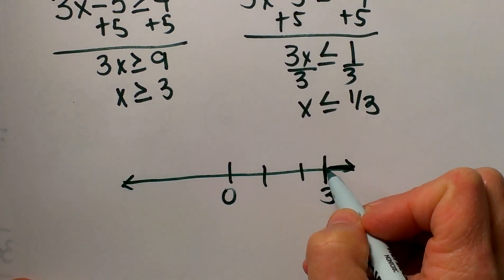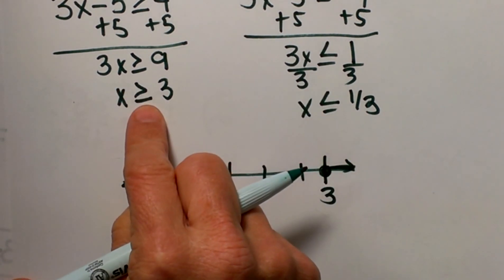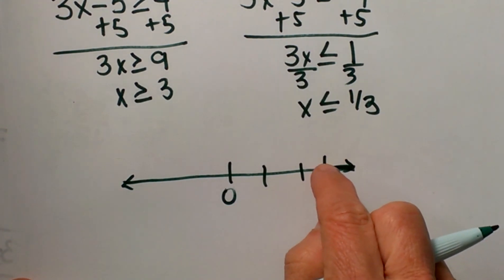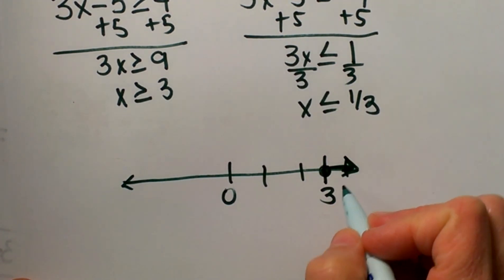So at 3, it's going to include 3 because this is greater than or equal to. So it includes 3 and goes to the right—4, 5, 6 are in that shaded region.